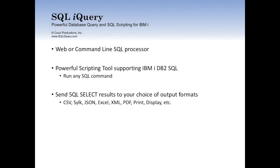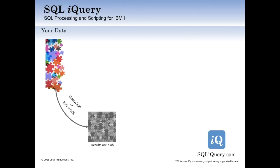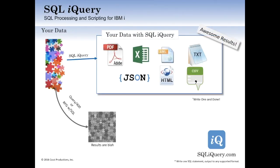You can also send the results of a select statement to your choice of output formats, such as CSV, JSON, Excel, PDF, and others. Your data normally is out there on the system all over the place. Users are using Query 400 or maybe RPG with some embedded SQL and they're getting results that are often static and relatively uninteresting — you either get it on the green screen, print, or a query report that's kind of static. If you run these same SQL statements with SQL iQuery, you get the dynamic capability. You can send the results of the exact same query to a PDF file, to an Excel file, or transform it into JSON so that a web application can utilize the data — all without changing the SQL statement itself. So you get awesome results when you use SQL iQuery.